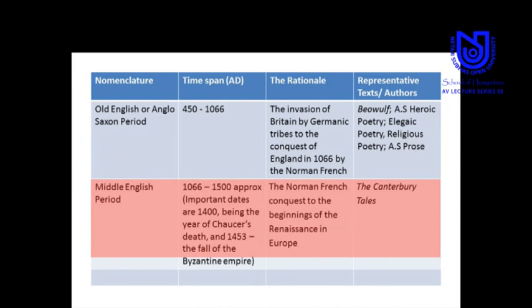The second phase would be 1066 to 1500 AD, where the important dates include 1400 — the year of Chaucer's death — and 1453, which was the fall of the Byzantine Empire to the Ottoman Turks, marking the historical beginnings of what we know as the Renaissance.